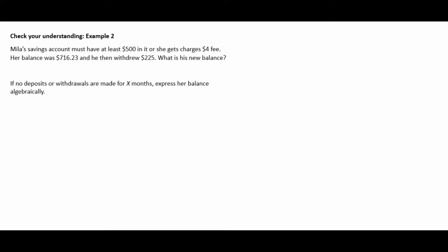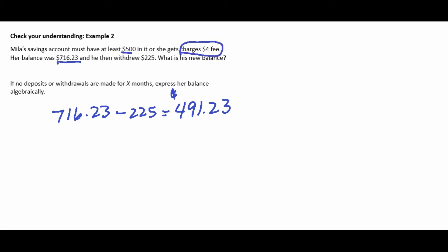Example two: Mila's savings account must have at least $500 or she gets charged a $4 fee. Her balance was $716.23 and she withdrew $225.00. That leaves her with $491.23. Since she dropped below the $500 minimum balance, a $4 fee is assessed, bringing her balance down to $487.23.